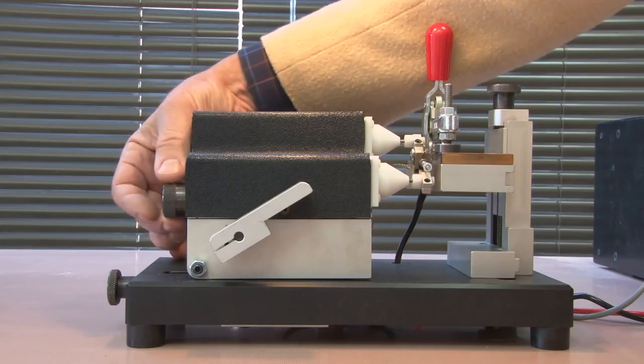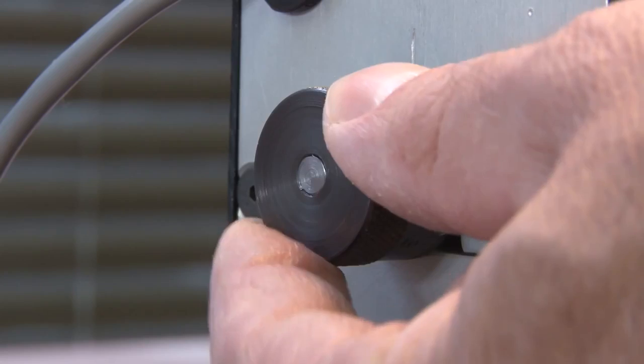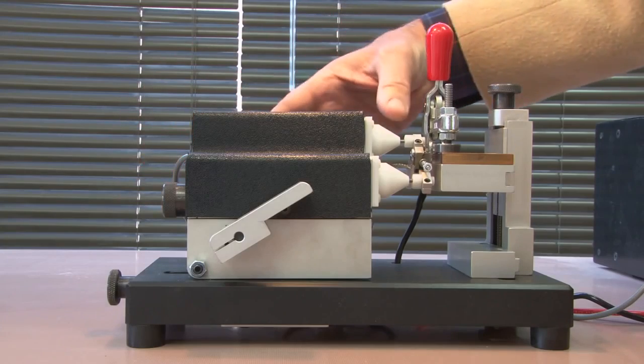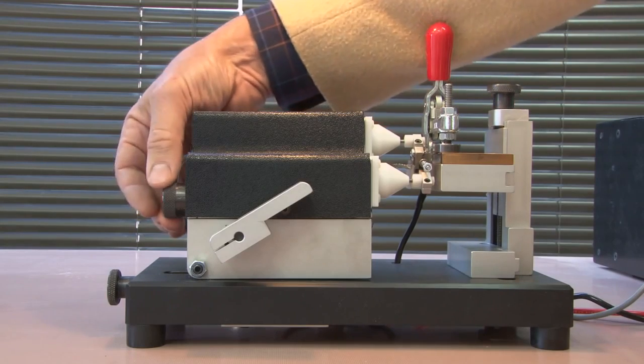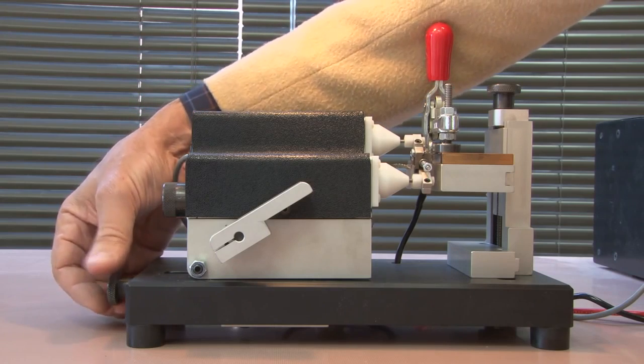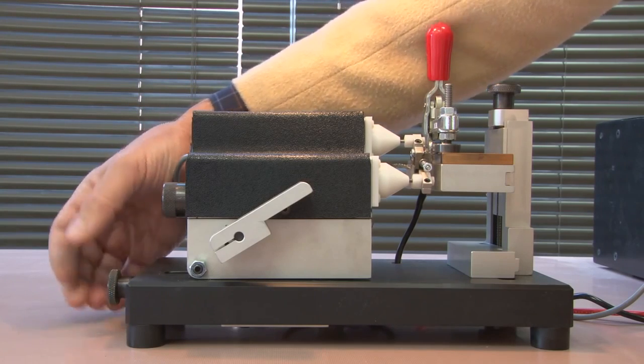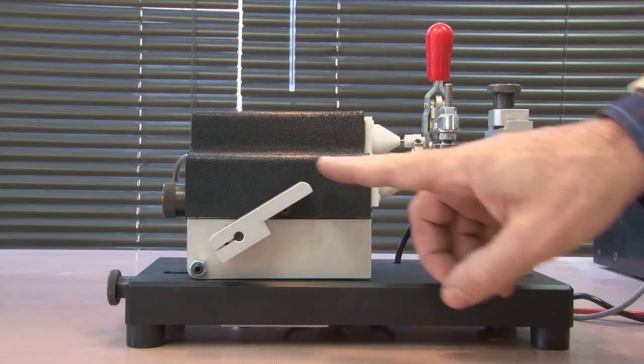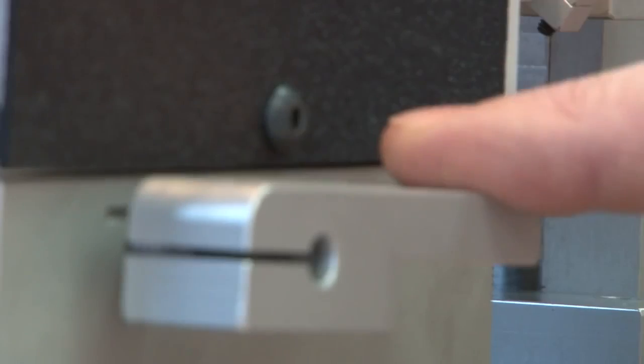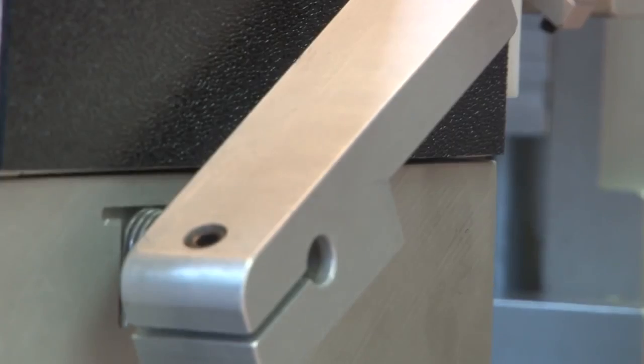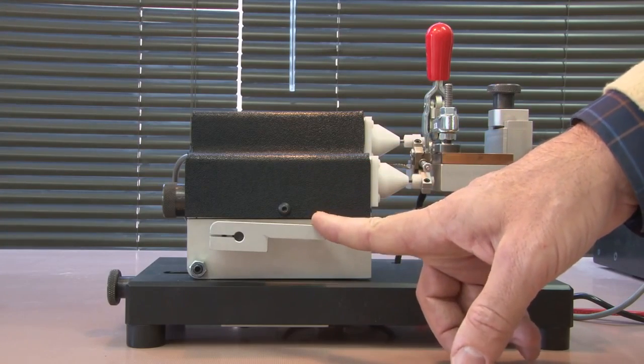On the movable side we have a gap control knob which sets the amount that the weldment retracts during initiation of the weld. Then we also have an adjustment to bring the two weldment materials together once they're aligned prior to initiation of the weld. This lever is the actual initiation lever which allows the weldment to retract and then triggers the weld process.